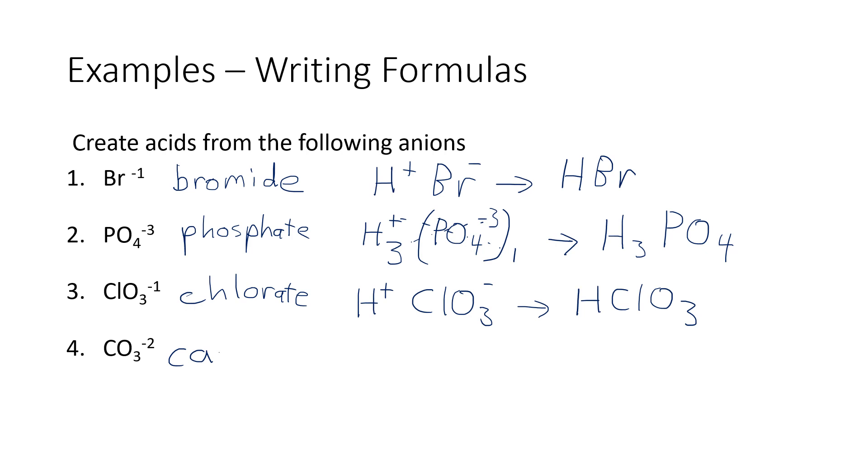Then our fourth example is the carbonate ion. H+ pairs up with it. And notice we've got a minus two charge on carbonate. So we're going to have to crisscross. When we crisscross with polyatomics, we put it in parentheses, but we don't really need the one. So cleaning up our final answer is H2CO3.